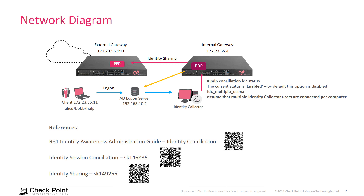Essentially we have an external gateway and an internal gateway. The internal gateway is learning identities using the identity collector. The login event that is performed on the laptop is forwarded to the identity collector, which is then communicating with the policy decision point on the security gateway on the internal gateway.